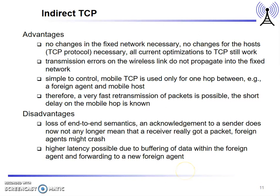The advantages of indirect TCP are: no changes in the fixed network, no changes for the host, all current TCP optimizations still work, transmission errors on the wireless link do not propagate into the fixed network, very fast retransmission with very short delay, and simple control. Mobile TCP is used only for one hop between a foreign agent and a mobile host. The disadvantages are loss of end-to-end semantics — an acknowledgement to a sender no longer means the receiver actually got the packet — the foreign agent might crash, and there may be higher latency.